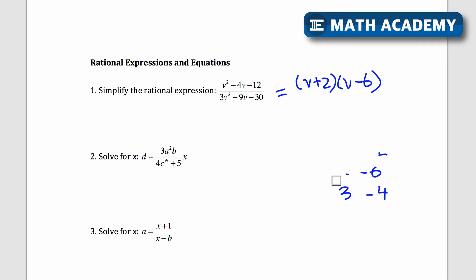And then for the bottom one, what I'm going to do is I'm going to take out the greatest common factor first, which is a 3. So before I go on factoring, I'm going to take out a 3 because 3, negative 9, negative 30. I get 3 times v squared minus 3v minus 10. And let's keep factoring this if we can. What multiplies to negative 10 and adds up to negative 3? Well, negative 5 times 2.